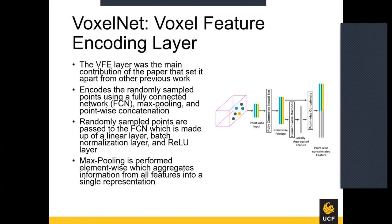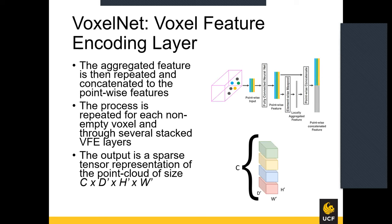The voxel feature encoding layer is the main contribution of this paper. This layer introduced the idea of end-to-end learning instead of using handcrafted features. It encodes the randomly sampled points using a fully connected network — consisting of a linear layer, a batch normalization layer, and a ReLU layer — followed by element-wise max pooling, which aggregates information from all features into a single representation, and then point-wise concatenation. The aggregated features are repeated and concatenated to the point-wise features. This process is repeated for each non-empty voxel using several stacked VFE layers. The output of the VFE layer is a 4D tensor of shape C by D by H by W.